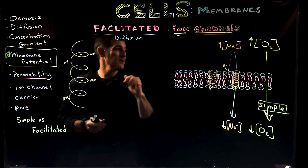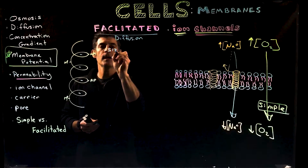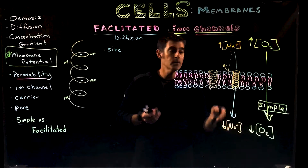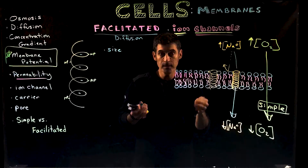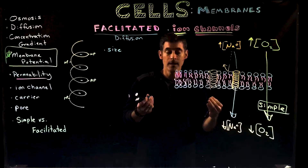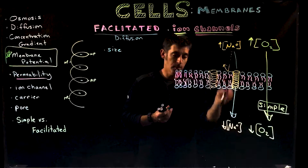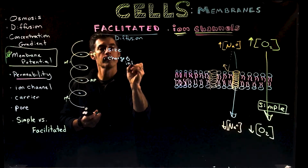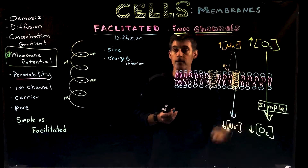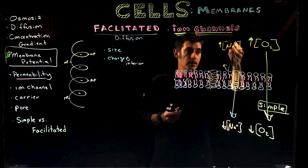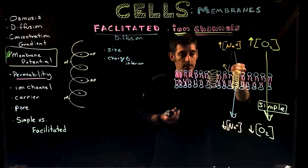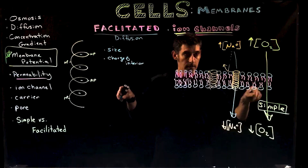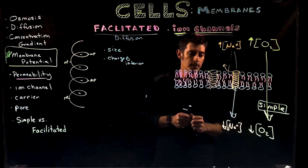Ion channels can be somewhat selective. They can be selective based on size — the size of the channel allows larger or smaller things through. If you're too big, you still won't get through, just like a screen in a window where small things like air and water molecules can pass but larger ones cannot. Unlike a screen, however, these channels also have charge. The charge of the interior of the channel can affect what moves through. If the channel is positively charged, a sodium ion would be repelled; if it's negatively charged or polar, the ion can move through much more easily.